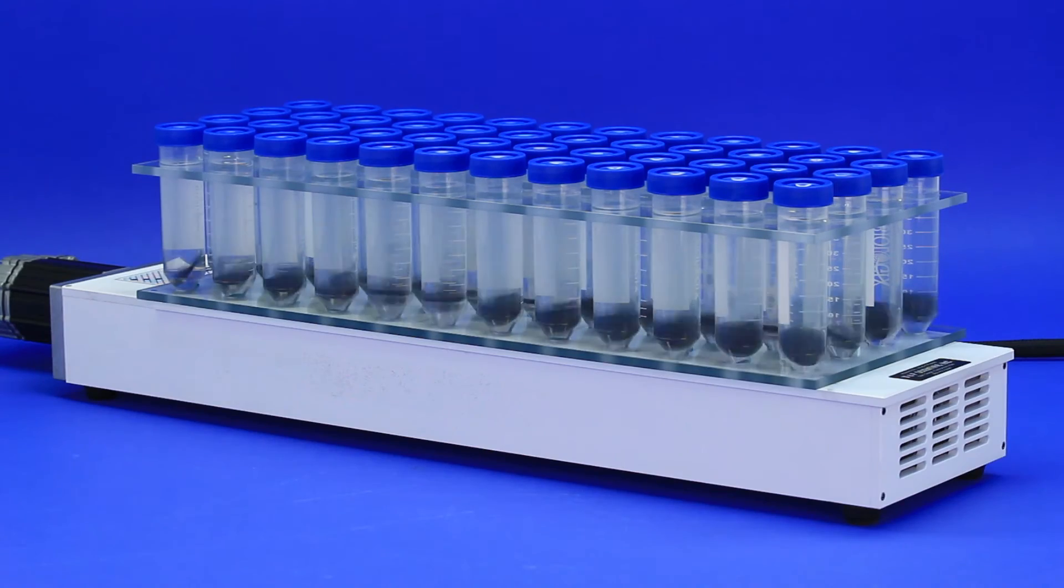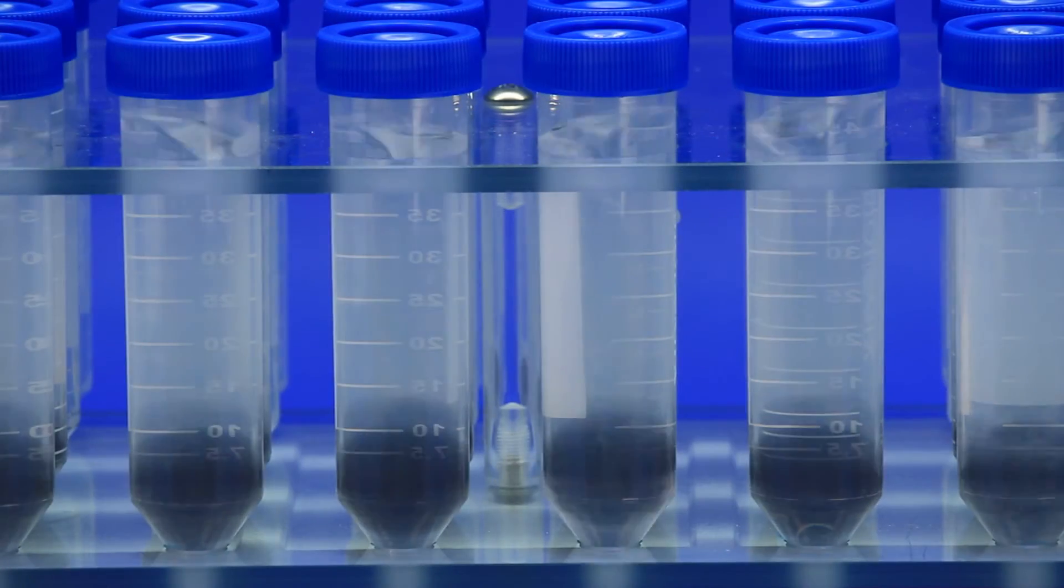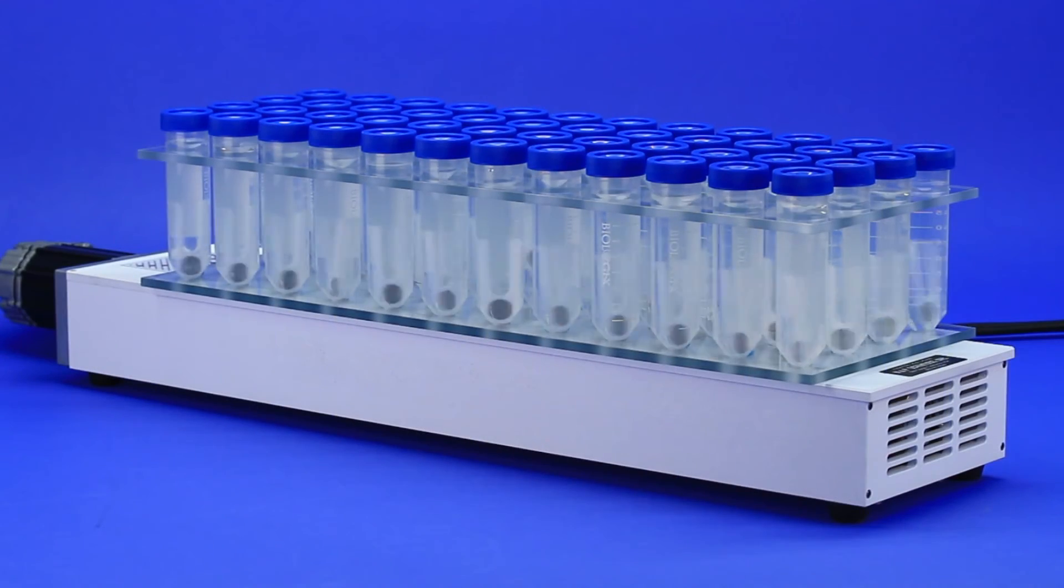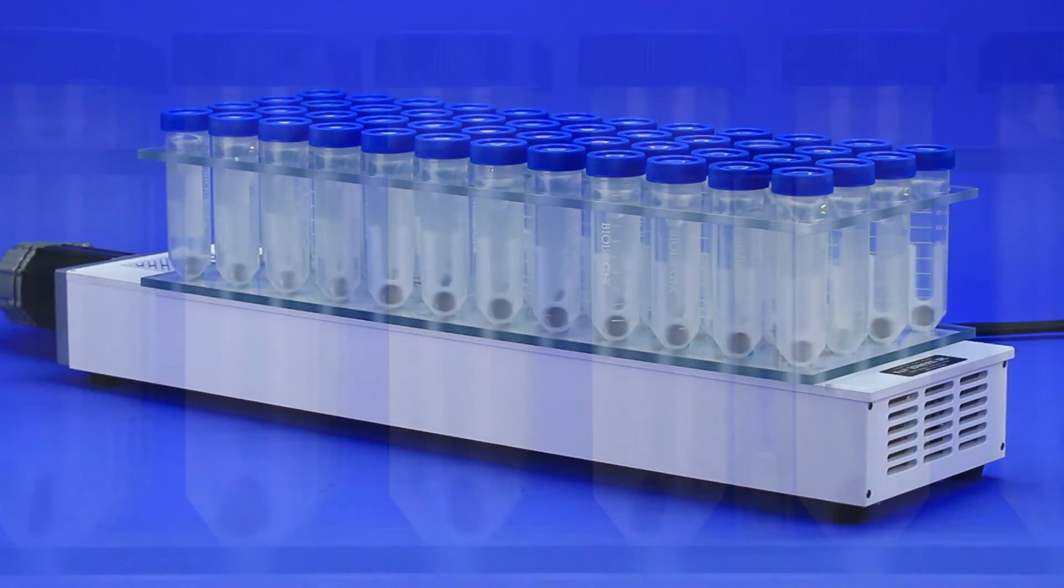Here we demonstrate vortex mixing in 50mm tubes on top of a magnetic tumble stirrer, first with a magnetic disc and then with one of VMP's unique tuning fork magnetic stir elements.